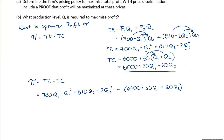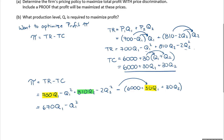Collecting like terms: the Q1 terms are 700Q1 − 30Q1 = 670Q1, and there are no other Q1² terms, so we keep −Q1². For Q2, we have 810Q2 − 30Q2 = 780Q2, keeping −2Q2². Then we subtract the constant 6,000. So the profit equation is: π = 670Q1 − Q1² + 780Q2 − 2Q2² − 6,000.